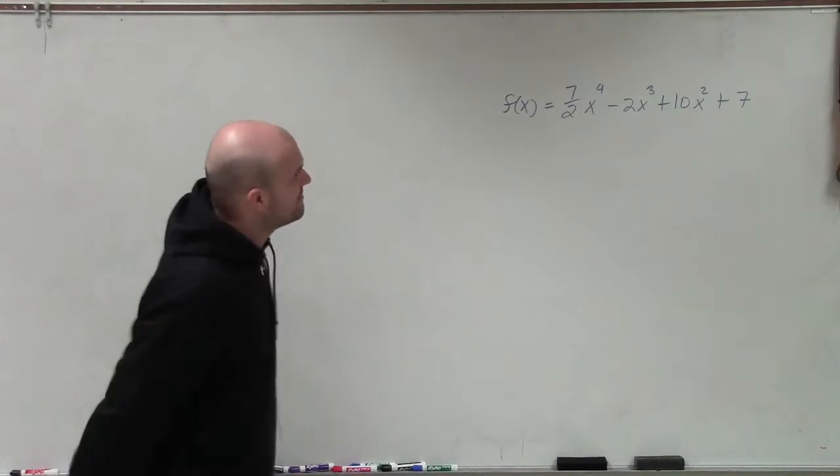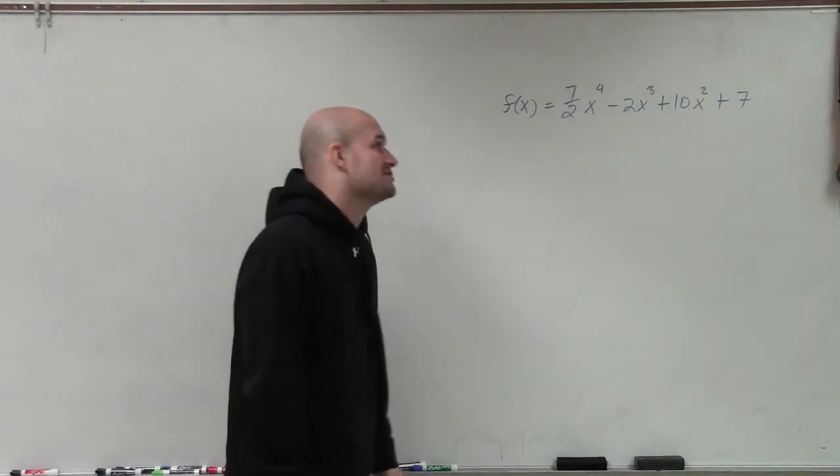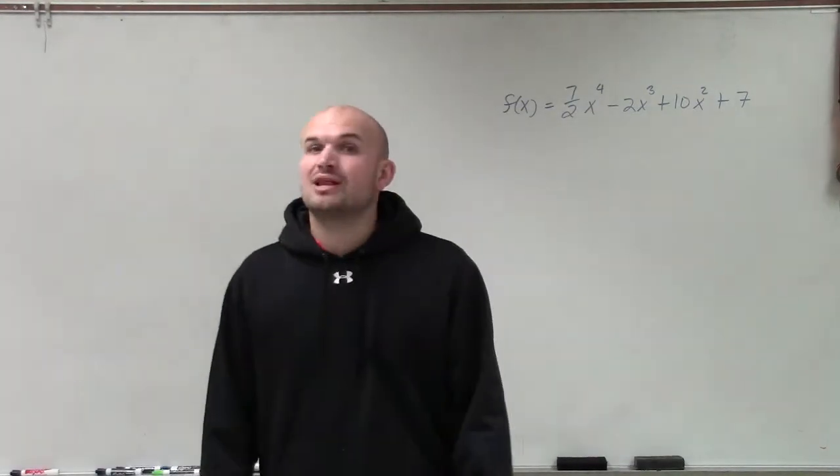Welcome. All right, so what we have here is f of x equals 7½x to the fourth minus 2x cubed plus 10x squared plus 7.